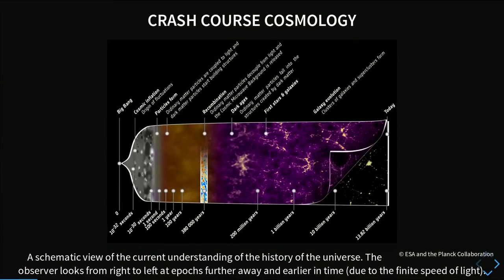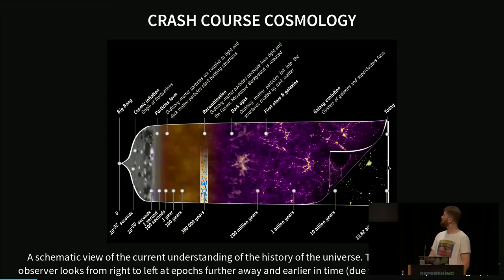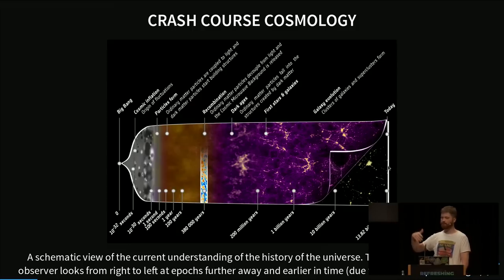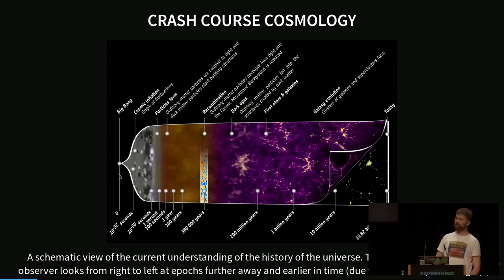This is a very famous plot by the Planck collaboration. Planck is a satellite that measures the cosmic microwave background, which I am going to come to in a second. Basically, this plot has it all — everything that we know about how the universe developed is in here. We are here today, and because light has a finite speed, we look away and we look into the past, because light from further away took some time to reach us. We can look all the way to the past, and of course we can't look all the way to the Big Bang, but that's where our story starts.